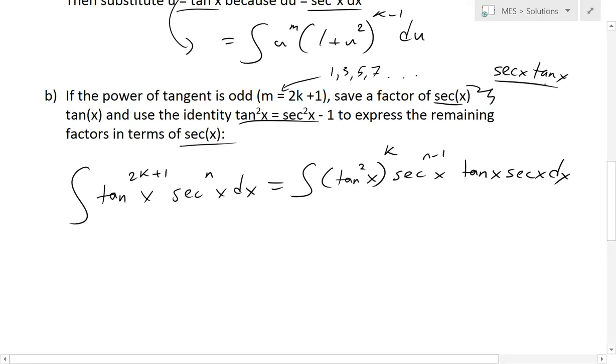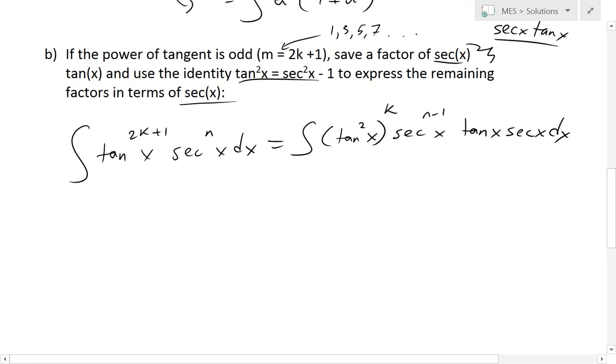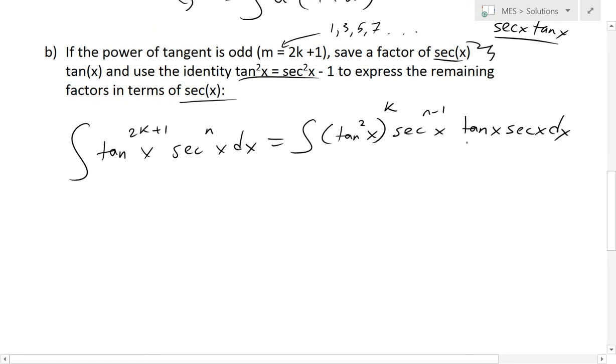Now we apply the identity, so this becomes (sec²x - 1)^k times sec^(n-1)(x) tan x secant x dx. It doesn't matter if you write secant x tan x or tan x secant x, it's the same thing. That's the term we separate.